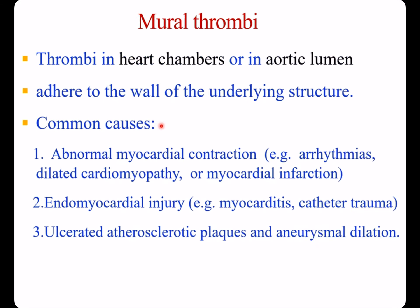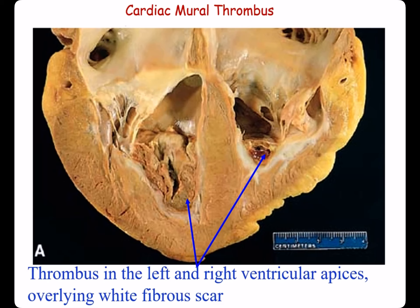Mural thrombus may occur in heart chambers or in the aortic lumen. Common causes include myocardial infarction, ulcerated atherosclerotic plaques, and aneurysmal dilation. This shows a cardiac mural thrombus with a background of myocardial infarction — thrombus in the left and right ventricular apices, overlying a white fibrous scar.